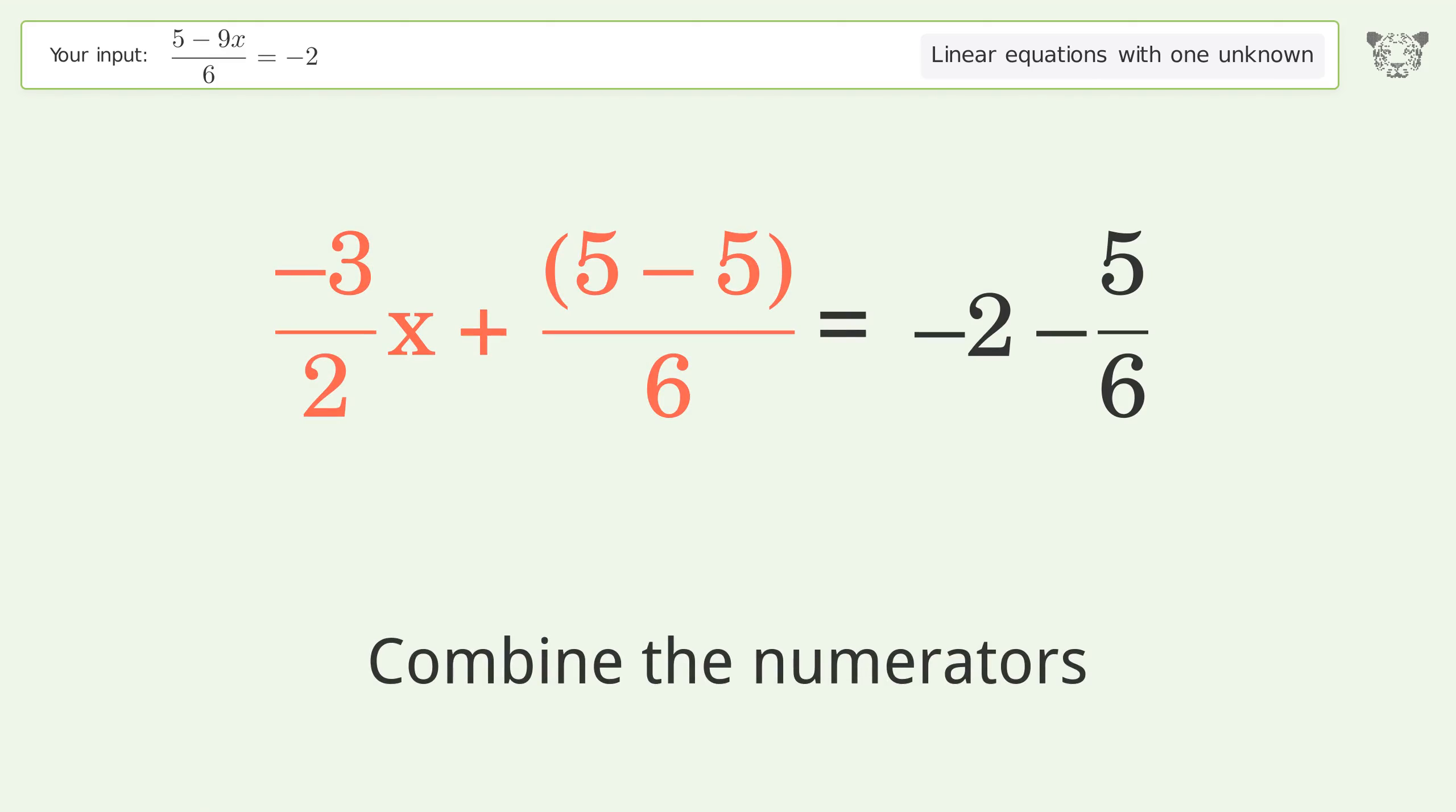Multiply the fractions. Simplify the arithmetic. And so the final result is x equals 17 over 9.